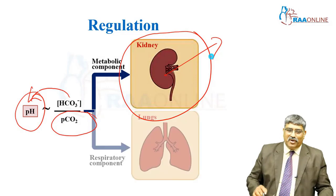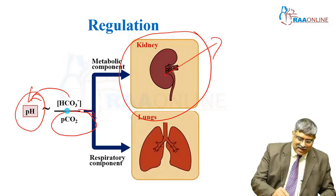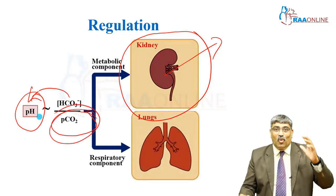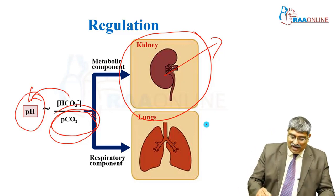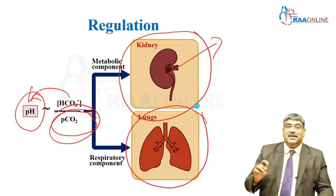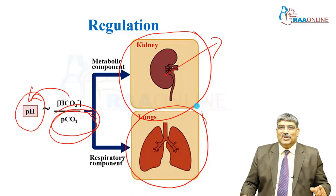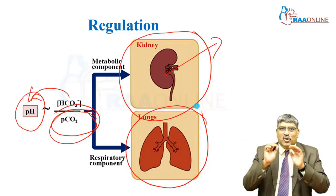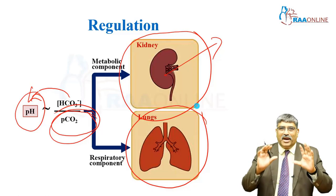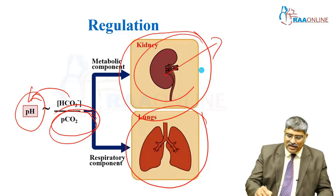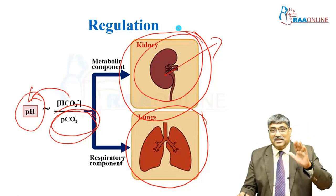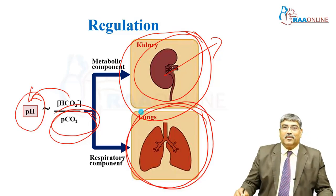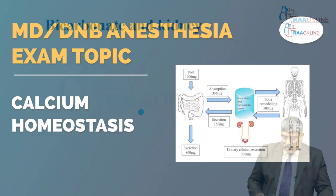Another important component is carbon dioxide. Carbonic acid breaks down into water and carbon dioxide, and this carbon dioxide is excreted by the lungs. So the two major organs involved in the regulation of bicarbonate are the kidney, where bicarbonate is exchanged for hydrogen ion, and the lungs, where carbon dioxide is exhaled.